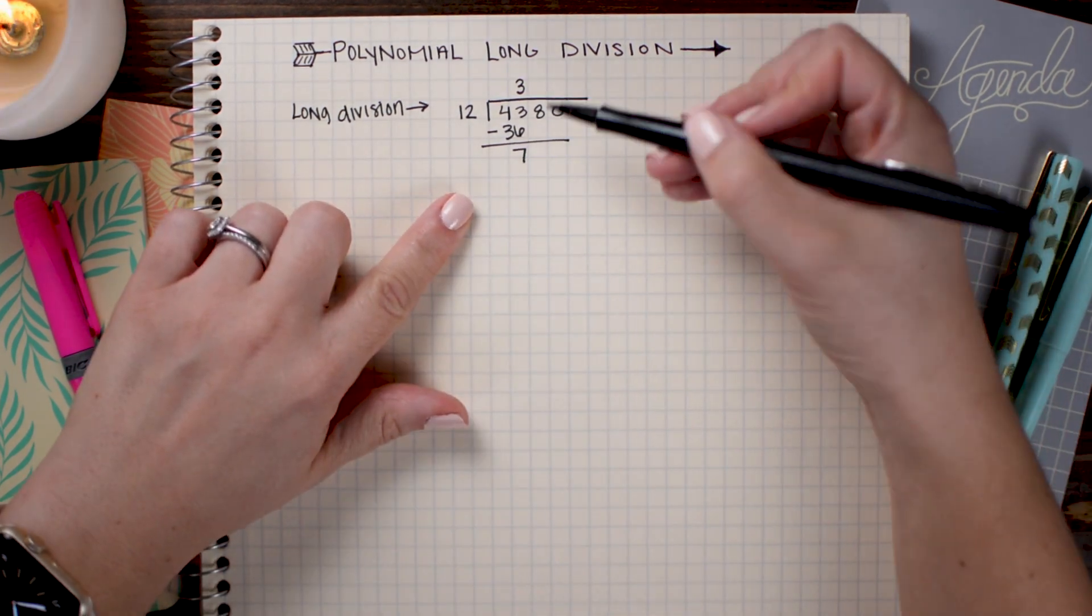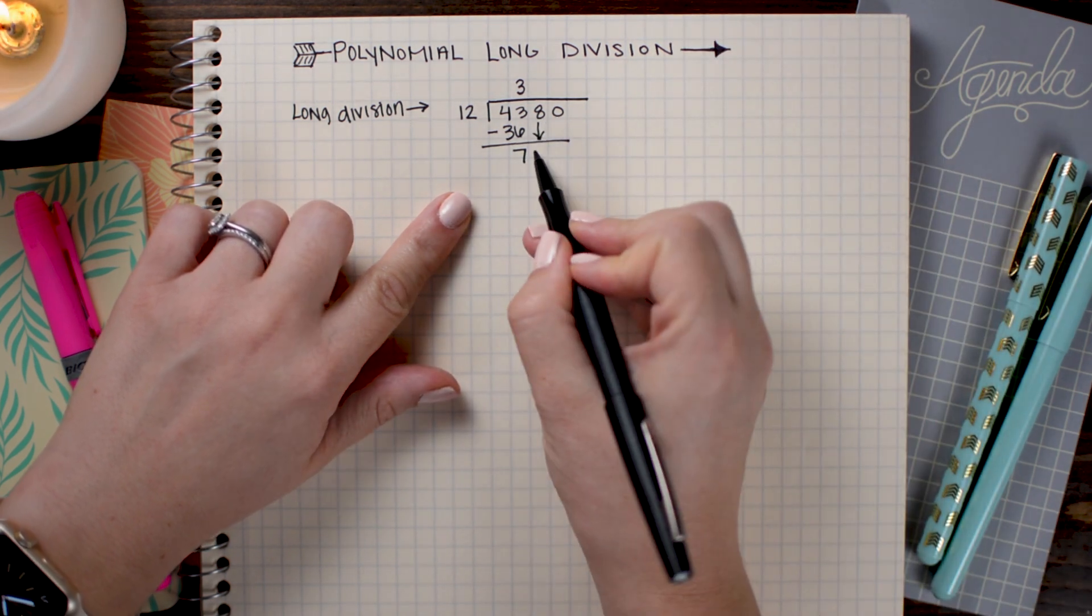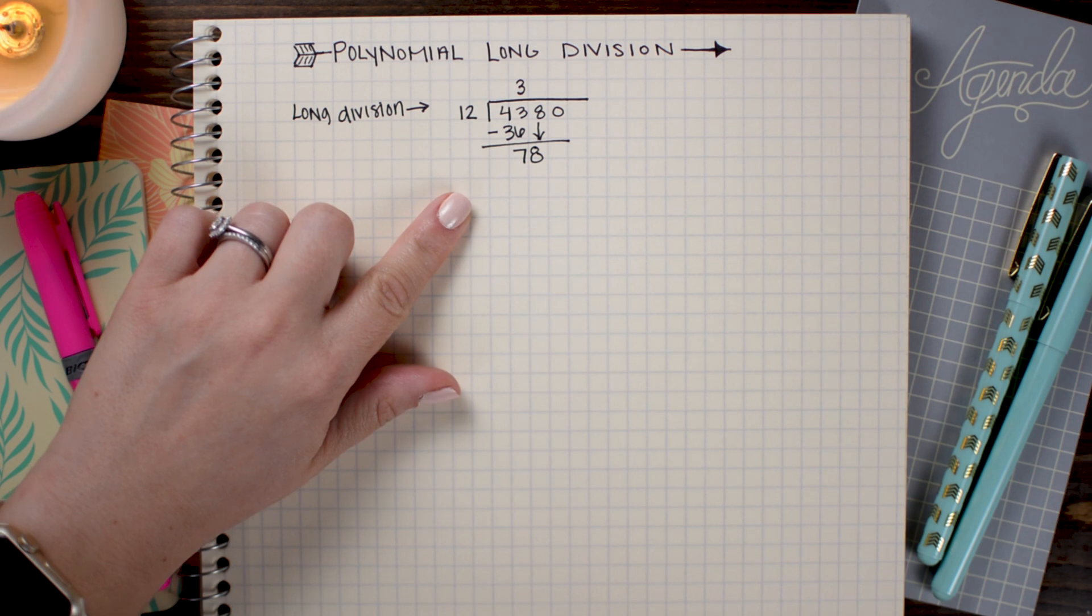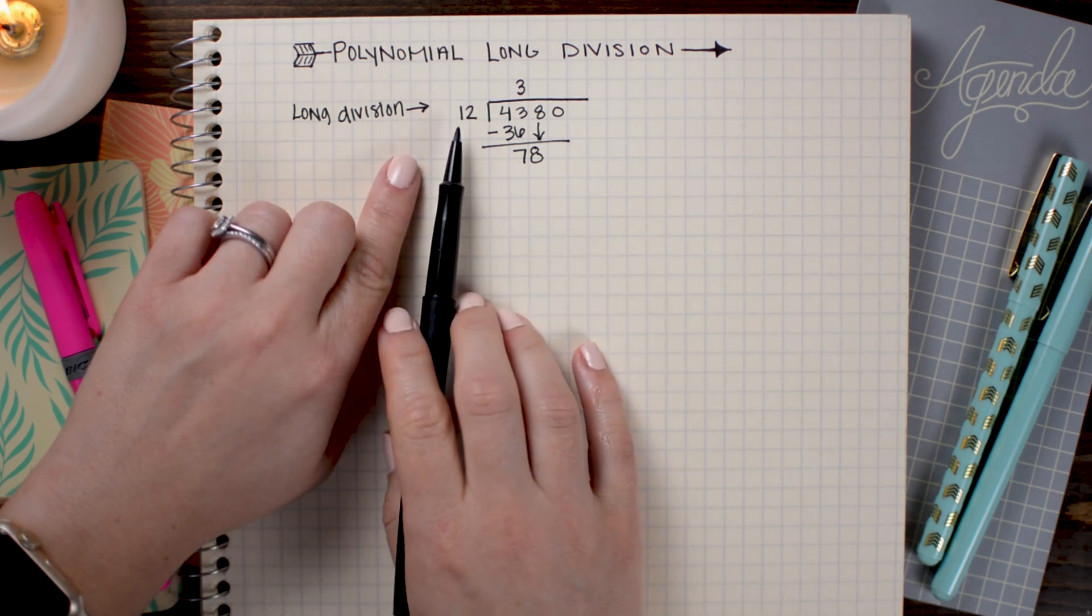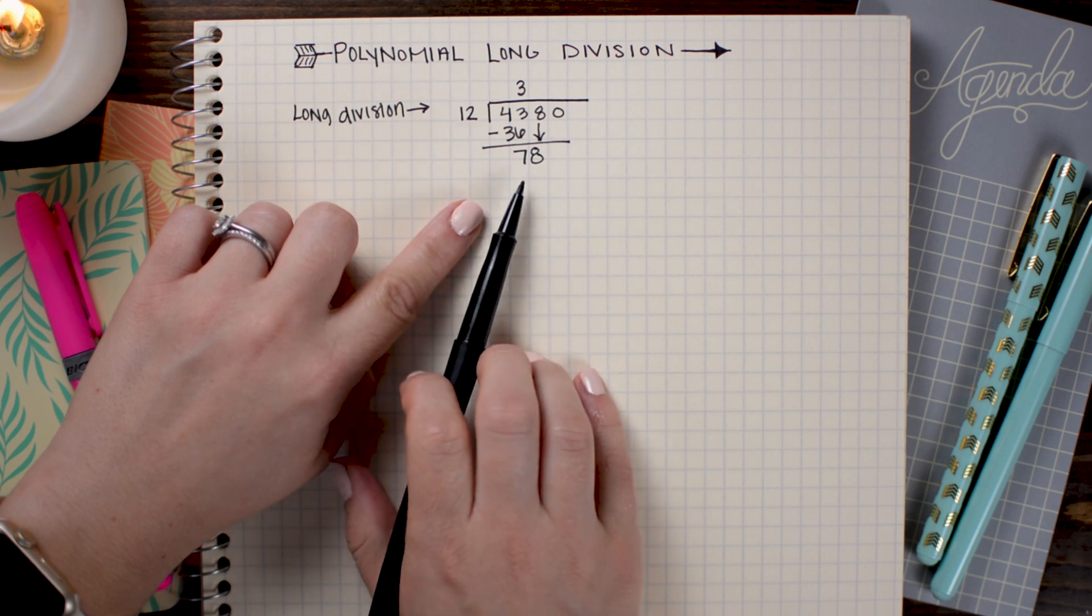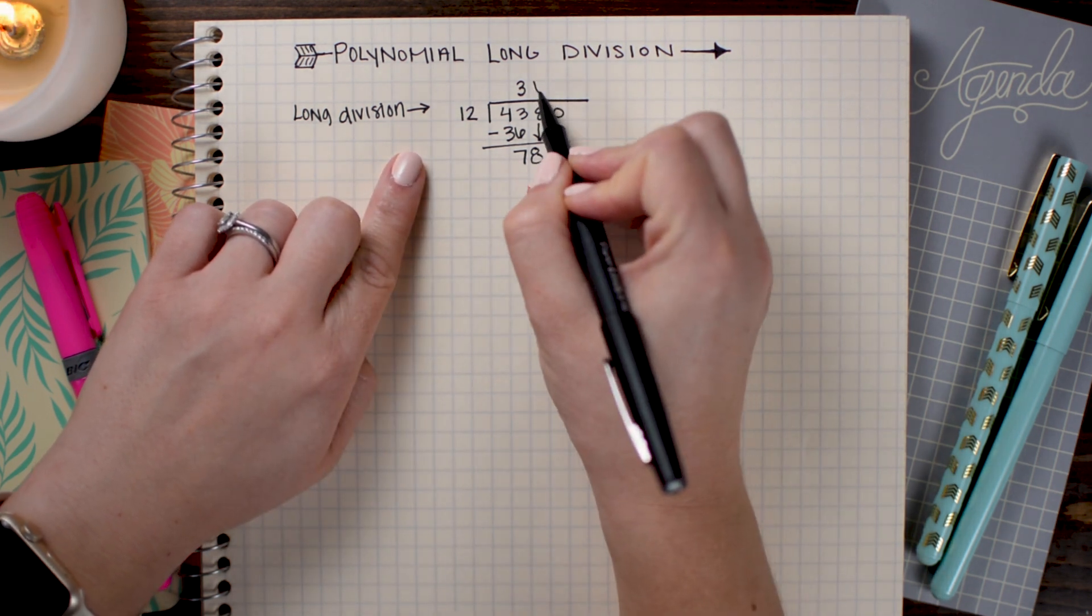The next step is to take the next digit and bring it down. So 8 is going to now get attached to the 7, which makes 78. And I'm going to see how many times I can put 12 into 78. I can do that six times since 6 times 12 is 72.